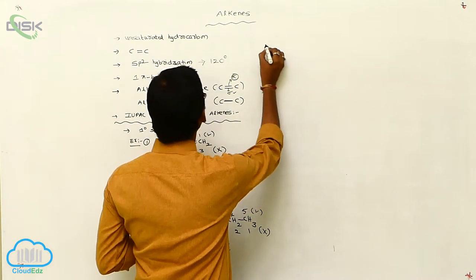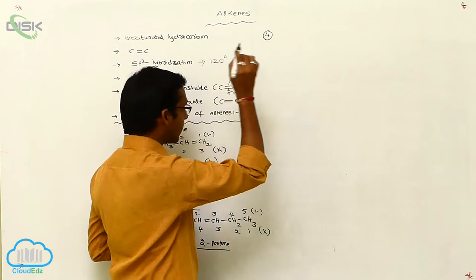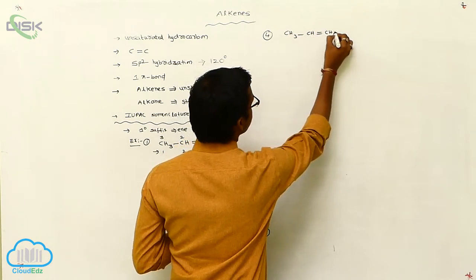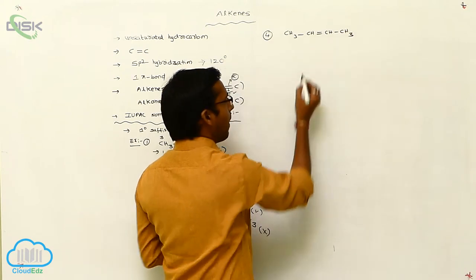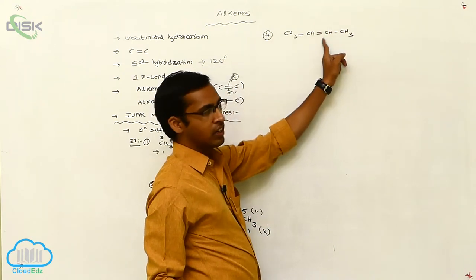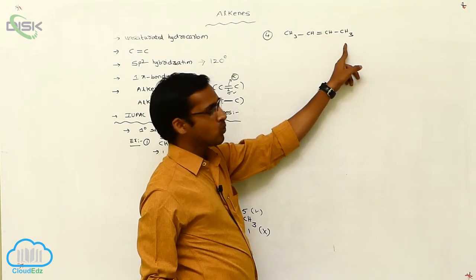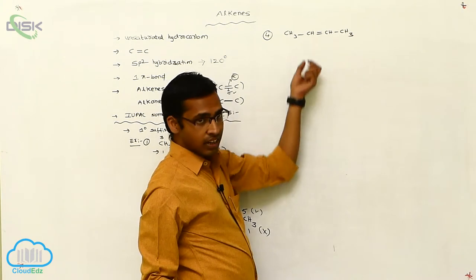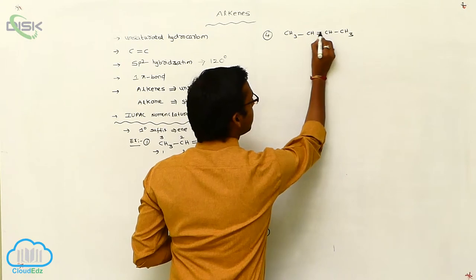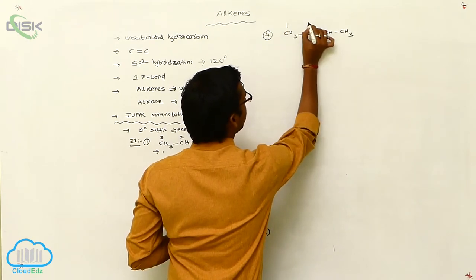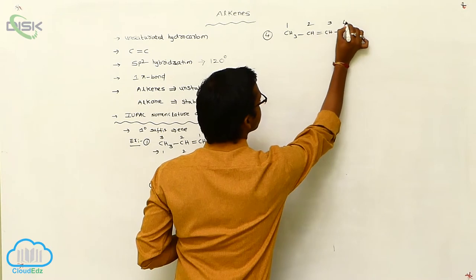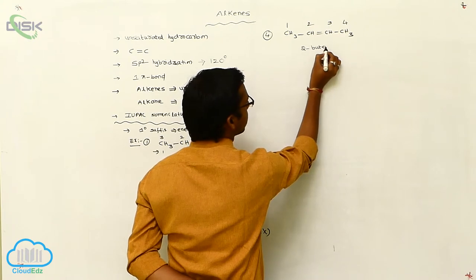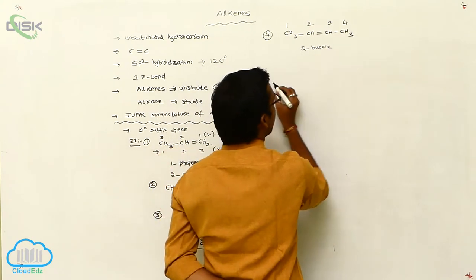Now observe the symmetrical alkene. For example, CH3-CH=CH-CH3. When a plane is passed through the double bond, it gives two identical parts — identical atoms or identical groups. That is called a symmetrical alkene. Numbering gives 4 carbons, so this is 2-butene — a symmetrical alkene.